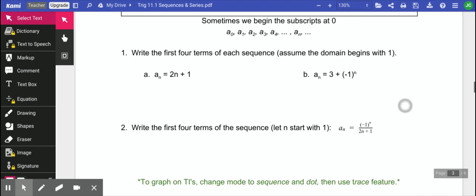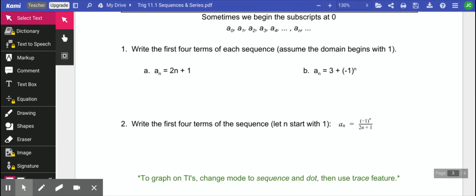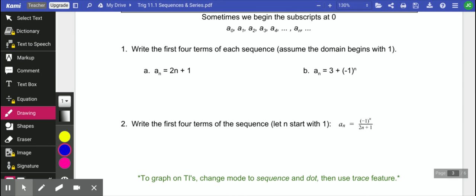So we're going to do a couple examples with this. We want to write the first four terms of each sequence. And like I said, it tells you what to start with. This one says assume that it starts with 1. So what this means is if we want to find a1, we are going to plug in 1. So our first term is 3.